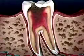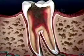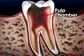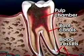Within the dentin lies the pulp, which includes the pulp chamber and the root canals, through which nerves and blood vessels enter the tooth.